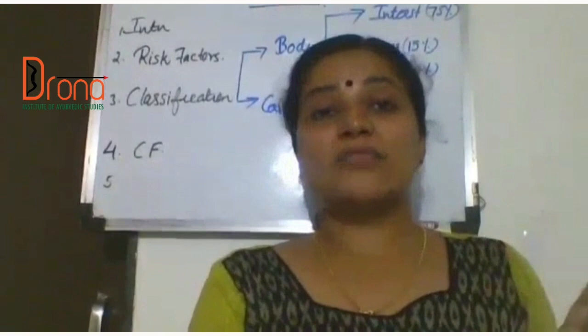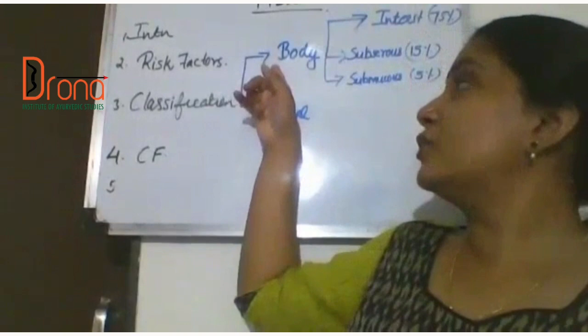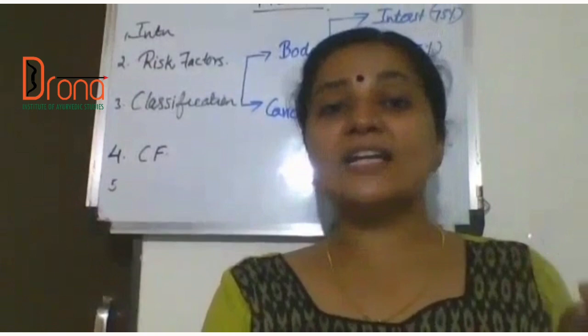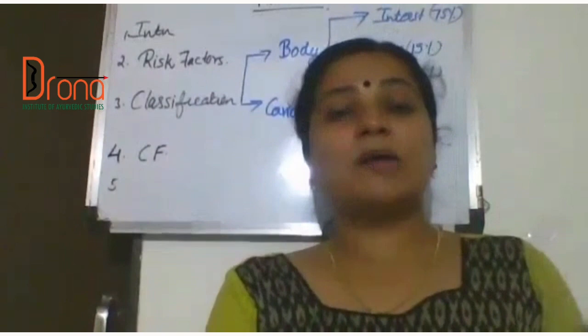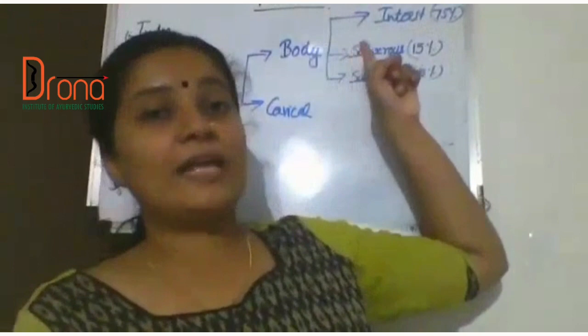Then coming to the classification of fibroid. Fibroid is classified mainly based on anatomical location — fibroid seen in the body of the uterus and also seen in the cervix. Fibroid seen in the body of the uterus is further classified into three main types: interstitial fibroid, subserous fibroid, and submucous fibroid.